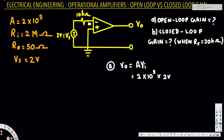This voltage is going to be the same across the input because the input resistance is 2 megaohms. Compared to the 10 kilohm resistance, this resistance is very high, so relatively there is no voltage drop across the 10 kilohm resistor. Therefore the input voltage is approximately 2 volts, and V_o equals 2×10⁵ times 2, which is 4×10⁵, or 400,000 volts.